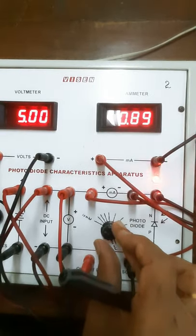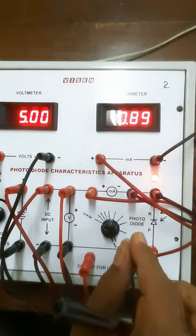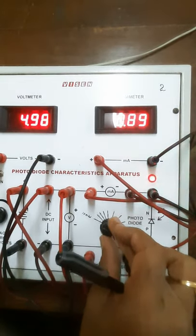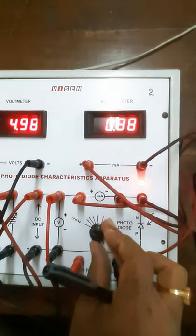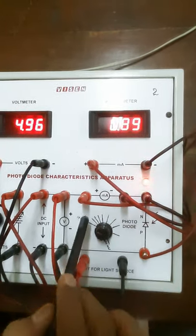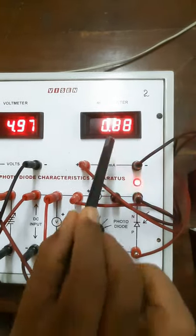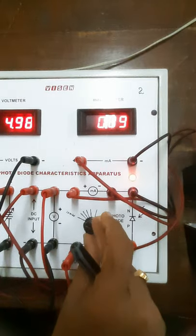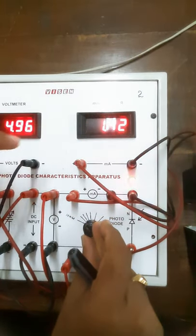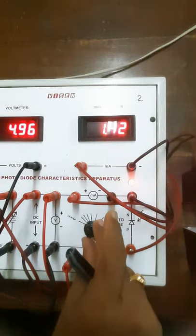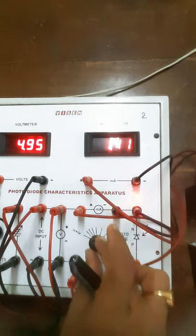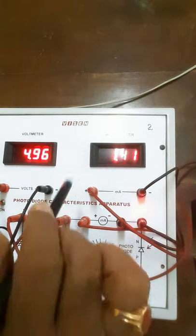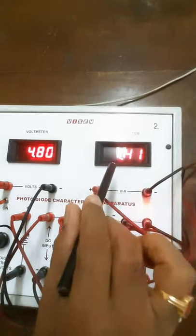Let us start the second part. By keeping voltage 5 volt constant, vary the power of an LED and copy the current of an LED. Now this is corresponding to the 10 milliwatt, corresponding current is 0.88 milliampere. Let me increase this to 20 and the corresponding current will be 1.42.